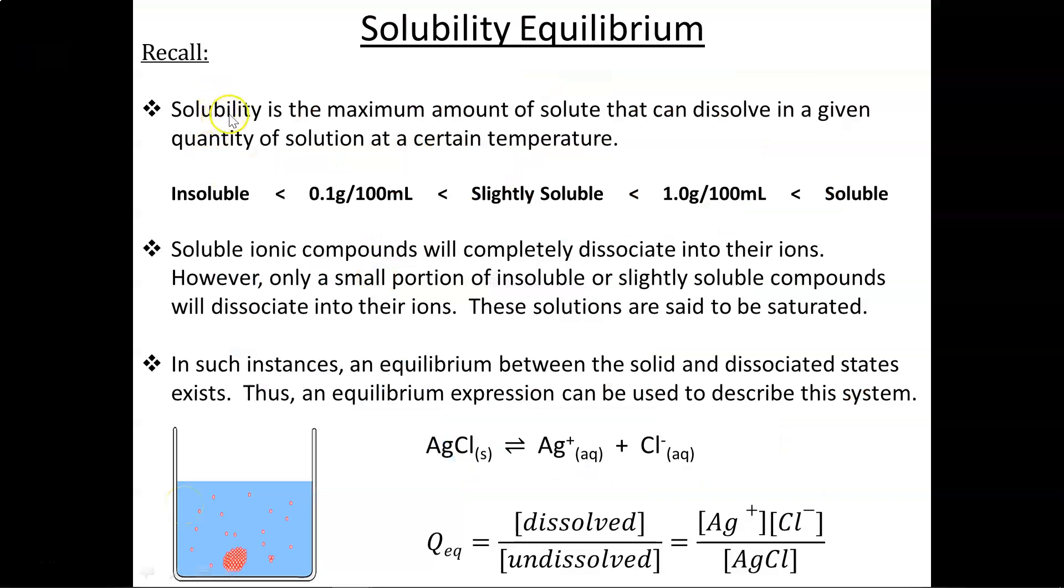Solubility is the maximum amount of solute that can dissolve in a given quantity of solution at a certain temperature. The term insoluble doesn't mean that the solid can't dissolve at all. It just means that very little can dissolve—less than 0.1 grams in 100 mL of solution. Soluble means more than 1 gram dissolving in 100 mL. Anything in between is considered slightly soluble.